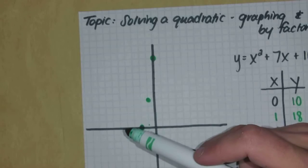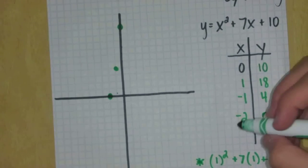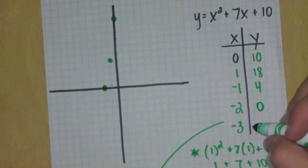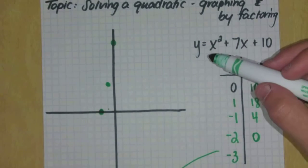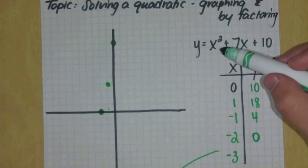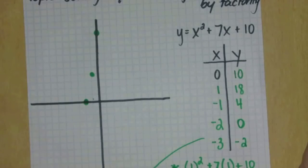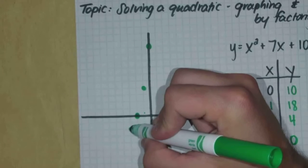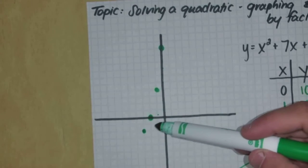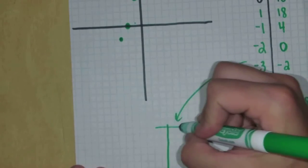I haven't found the vertex — the low point — yet, so I need to keep plugging in points. Let's plug in negative three. Negative three squared is positive nine. Seven times negative three is negative twenty-one. Nine plus ten is nineteen; nineteen plus negative twenty-one gives me negative two. So I have the point (-3, -2). I'm still going down, but the gaps between points are getting smaller, so I know I'm getting close to turning around.